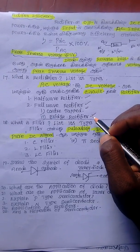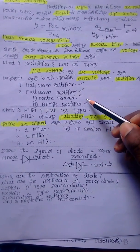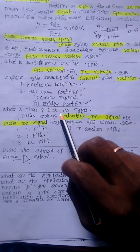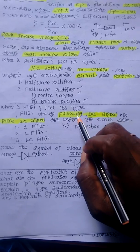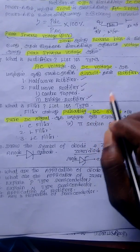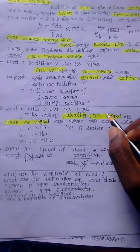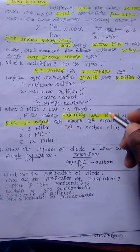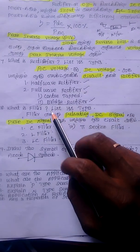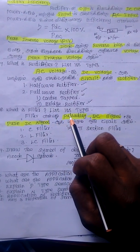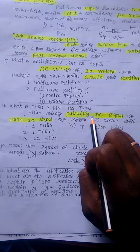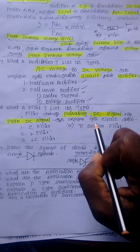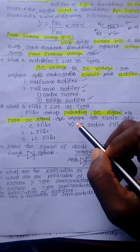What is a filter? A filter is used to convert pulsating DC into pure DC. There are different types of filters used in rectifier circuits.